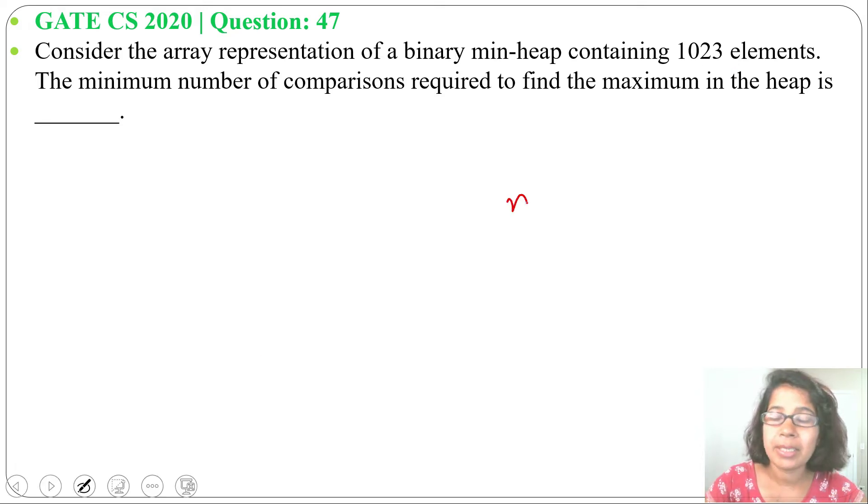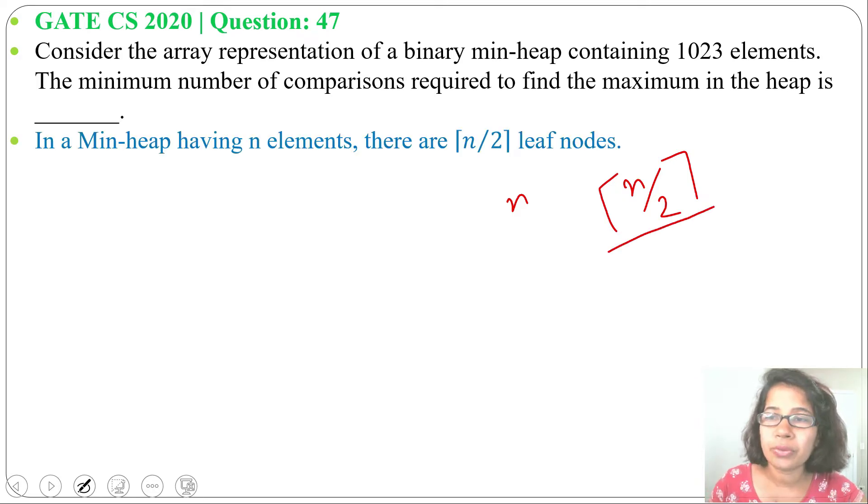For n elements, how many elements will be in leaf? There will be n divided by 2 upper bound or ceiling function. Now, for 1023 elements, how many elements will be in leaf? 1023 divided 2, its upper bound. So, it will be 511.5, its upper limit that will be 512.